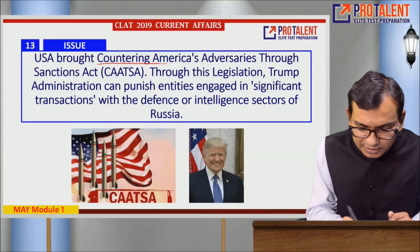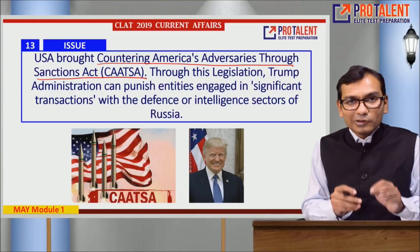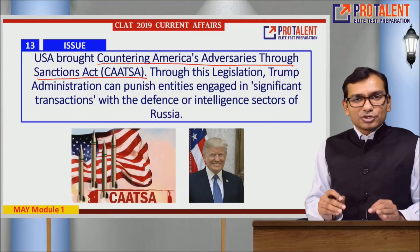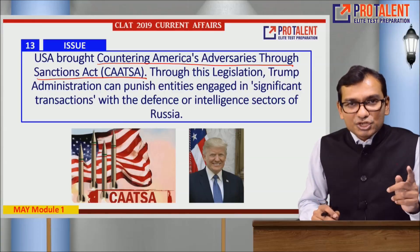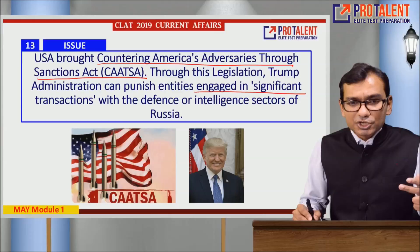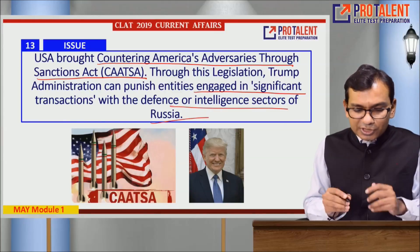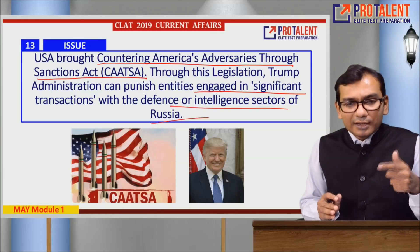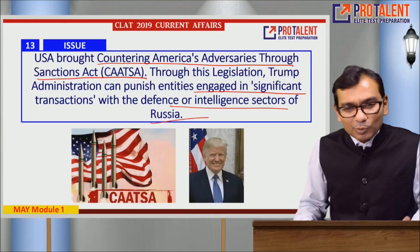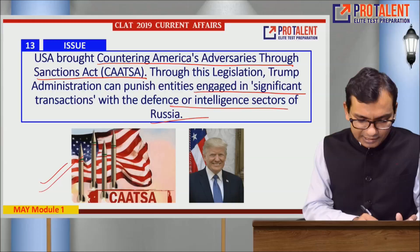Point thirteen: the USA brought the Countering America's Adversaries Through Sanctions Act, known as CAATSA. Through this legislation, the Trump administration can punish entities engaged in significant transactions with the defense or intelligence sectors of Russia.